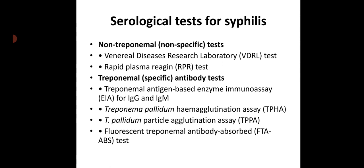Non-treponemal or non-specific tests: examples are VDRL (Venereal Disease Research Laboratory) test and RPR (Rapid Plasma Reagin) test. Treponemal or specific antibody tests include treponemal antigen-based immunoassay for IgG and IgM, Treponema pallidum hemagglutination assay (TPHA), Treponema pallidum particle agglutination assay (TPPA), and fluorescent treponemal antibody-absorbed (FTA-ABS) test.